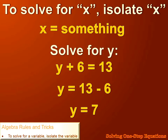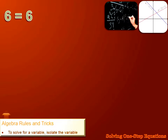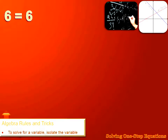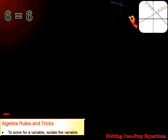We'd rewrite it to read y equals 13 minus 6, or y equals 7. So to solve for x, isolate x. That's our first rule: to solve for a variable, isolate the variable. Now let's work on our second rule.